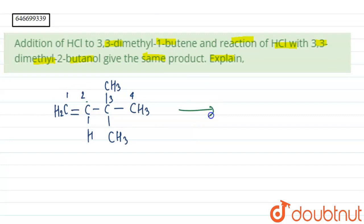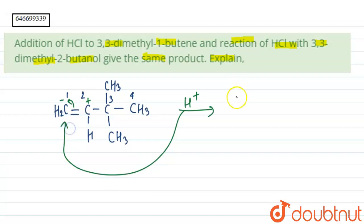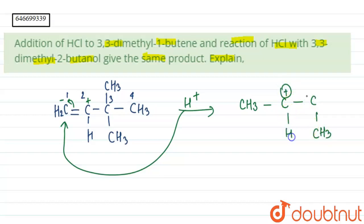Now what happens is that H+ attacks this double bond, so electrons shift here. This carbon will have negative charge and the adjacent carbon will have positive charge. H+ attacks the negative carbon such that we have carbocation formation. This is our carbocation formed, and as we can see, this is a secondary carbocation.